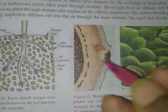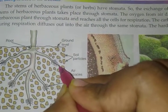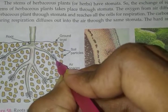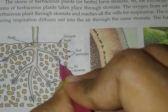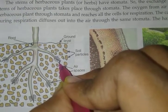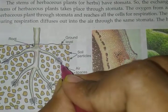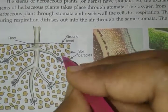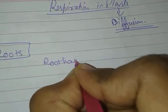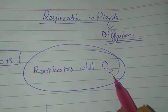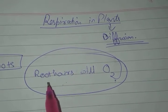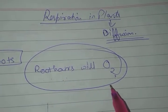We can see in the diagram that the roots contain root hairs. Root hairs are thread-like extensions of the epidermal cells of the roots. The epidermal cells are the uppermost layer of the plant's body. So the epidermal cells in the roots contain thread-like structures called root hairs. Soil contains air molecules meaning oxygen, so from the soil the root hairs take in the oxygen. The root hairs are in contact with the soil and will take all the oxygen from the soil.